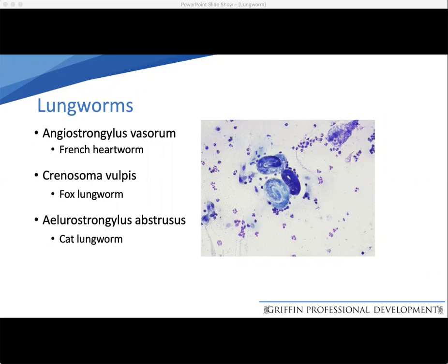Angiostrongylus is sometimes known as the French heartworm. We should also consider Oslerus osleri and Crenosoma vulpis, which is the fox lungworm but will affect dogs. And although this is a canine medicine course, just for completeness, we'll mention Aelurostrongylus abstrusus, which is the cat lungworm.